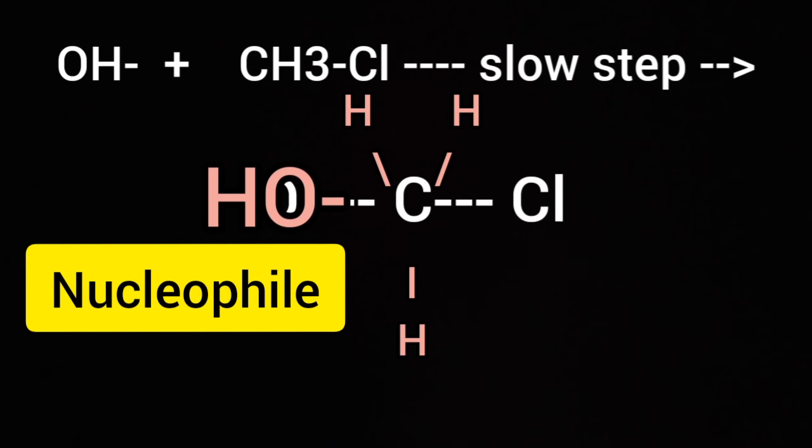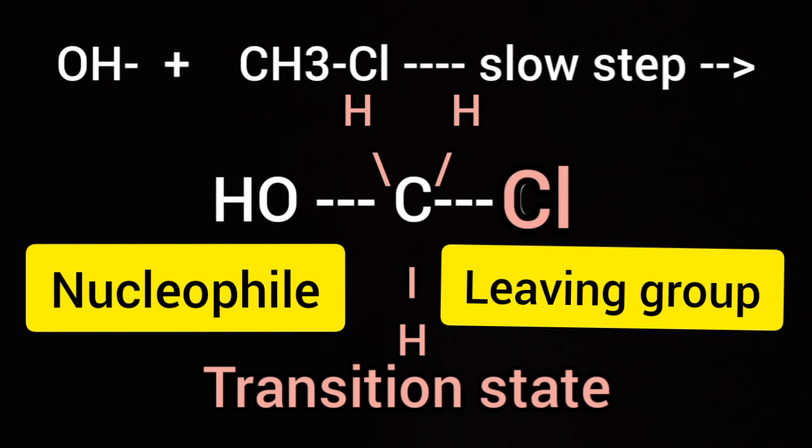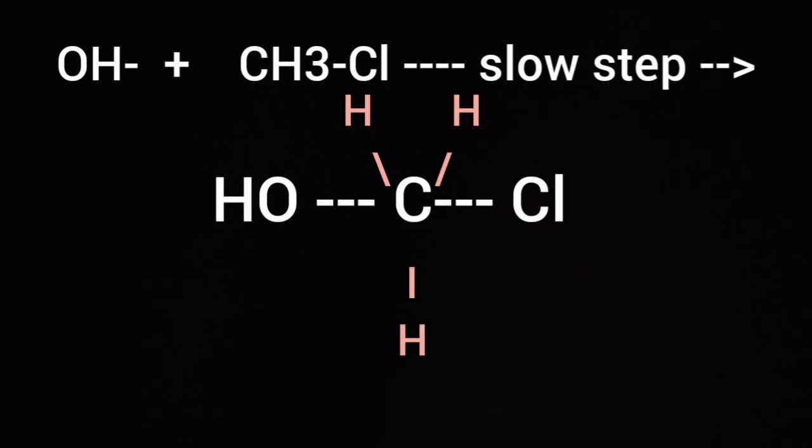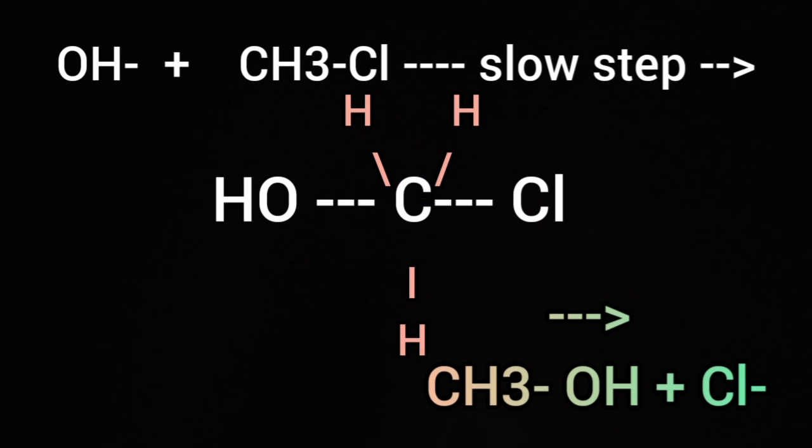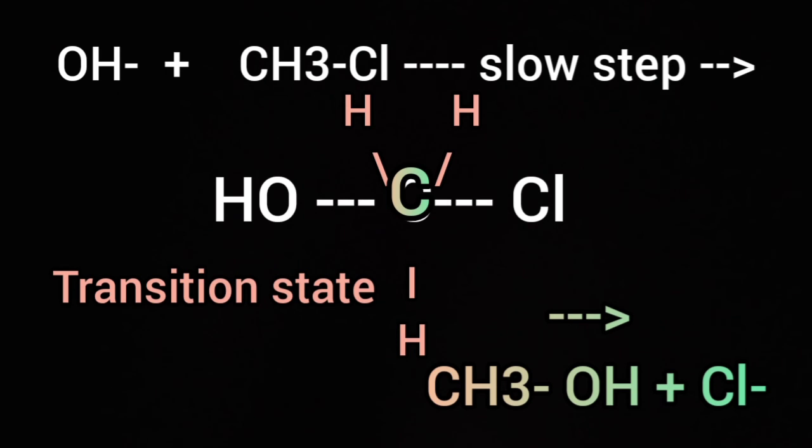In the transient state, the carbon atom is simultaneously bonded to incoming OH minus or nucleophile and outgoing Cl or leaving group. The transient state is unstable because the carbon atom is simultaneously bonded to five atoms and therefore it is not stable.